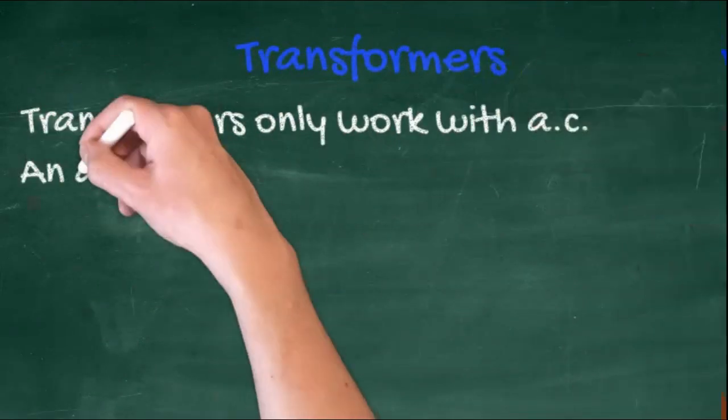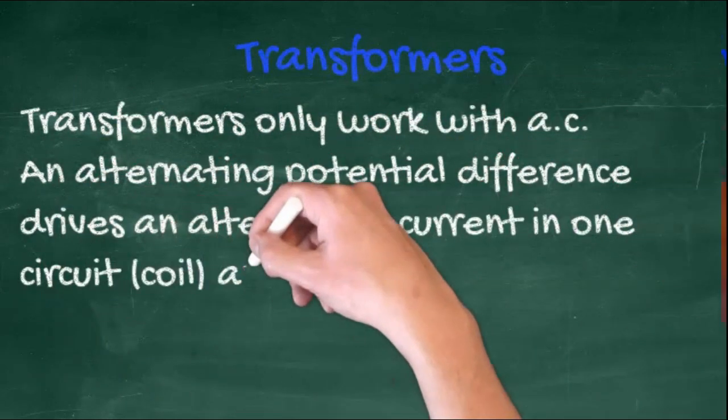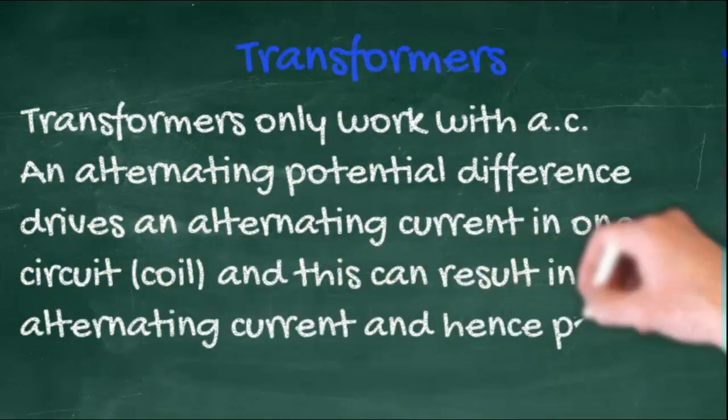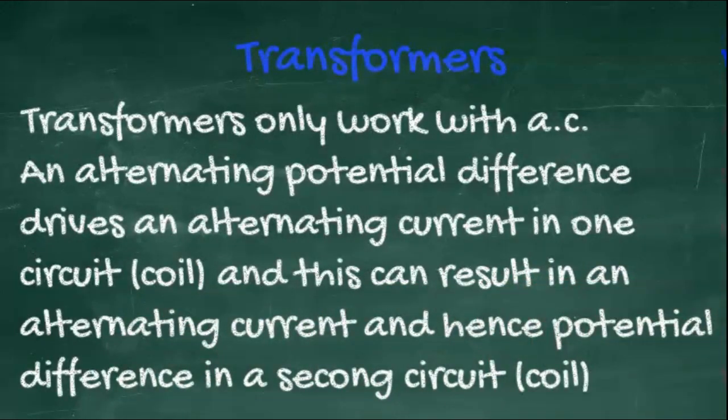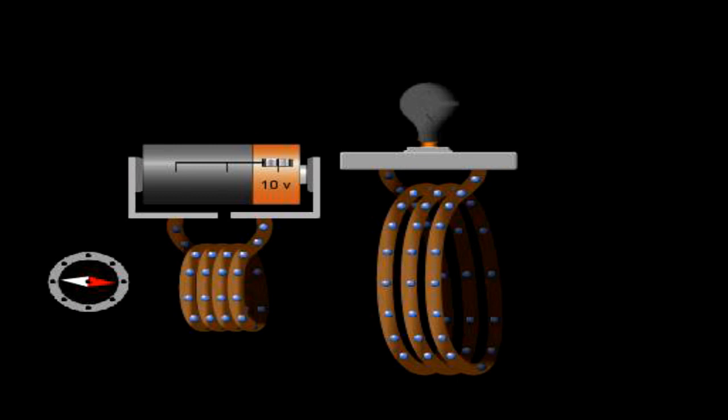Transformers only work with alternating current. An alternating potential difference drives an alternating current in one circuit, and this can result in an alternating potential difference in a second circuit. Transformers do not work with direct current.